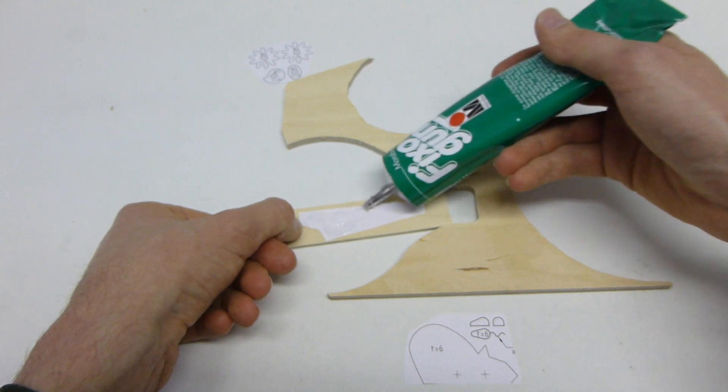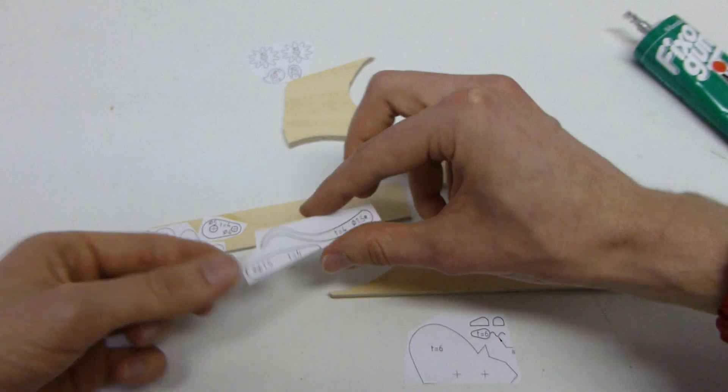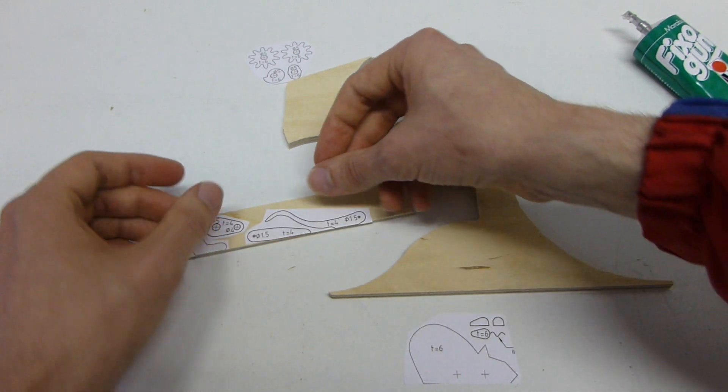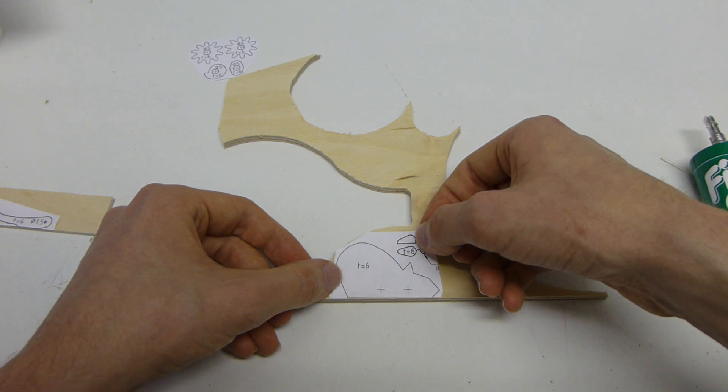Zum Aufkleben des Papiers sollte ein Bastelkleber verwendet werden, der kaum Rückstände hinterlässt. Teile mit geraden Kanten am besten gleich so auf das Holz kleben, dass man diese nicht mehr aussägen muss.